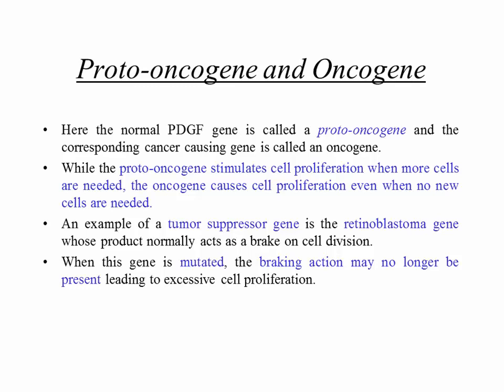An example of a tumor suppressor gene is the retinoblastoma gene, whose product normally acts as a brake on cell division. When this gene is mutated, the brake is gone, the cell keeps dividing, forms tumors, and ultimately leads to the cancer called retinoblastoma. When this gene is mutated, the braking action may no longer be present, leading to excessive cell proliferation.